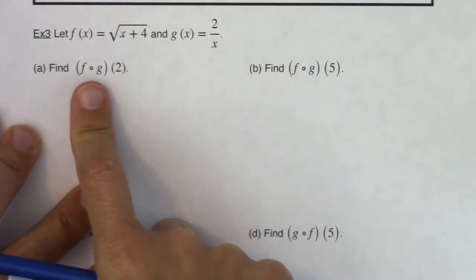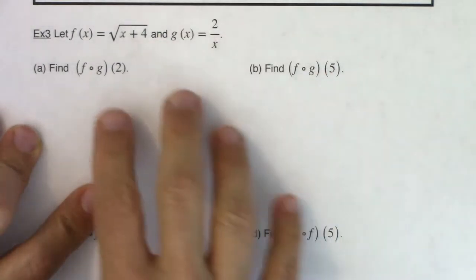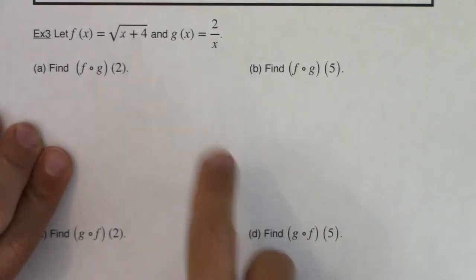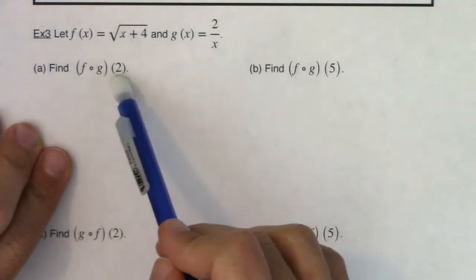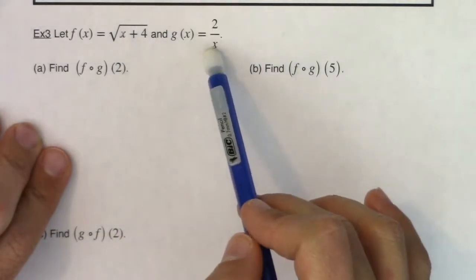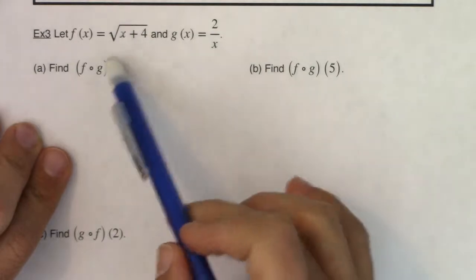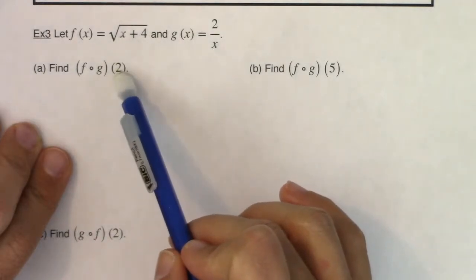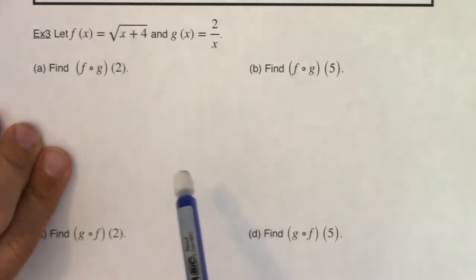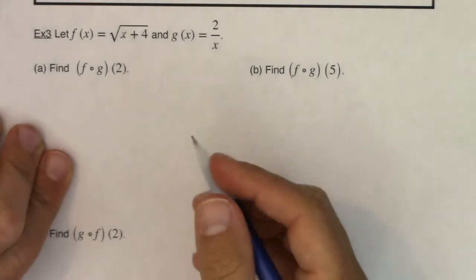For right now I'm just going to work through the mechanics. There aren't any domain issues with the numbers I've chosen — x values of 2 and 5 don't have any issues. You can plug 2 or 5 into the fraction and into the radical. I would have a tougher time finding f of g of 0, since 0 is a problem, but I intentionally didn't pick that. So let's practice.